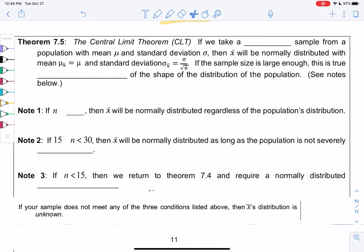Section 7.4: Central Limit Theorem, probably one of the most important theorems in all of statistics. If we take a large sample from a population with a mean of μ and standard deviation σ, then x̄ will be normally distributed. Remember, those sample means with a mean of μ and a standard deviation of σ over square root n.